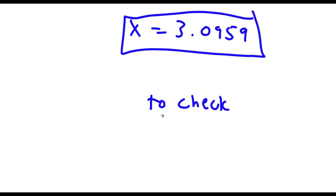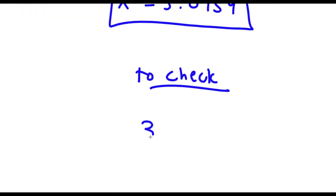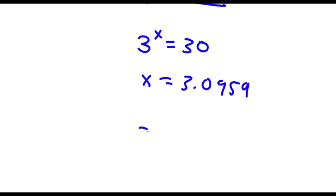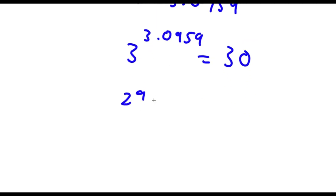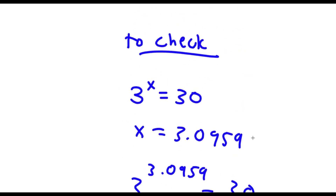Now to check: my original equation was 3 to the power of x is equal to 30. We know that x is equal to 3.0959. So if I plug this in, I have 3 to the power of 3.0959 is equal to 30. Now 3 to the power of 3.0959 is equal to 29.9989, which is approximately 30. So meaning 30 is equal to 30, and our solution is right.